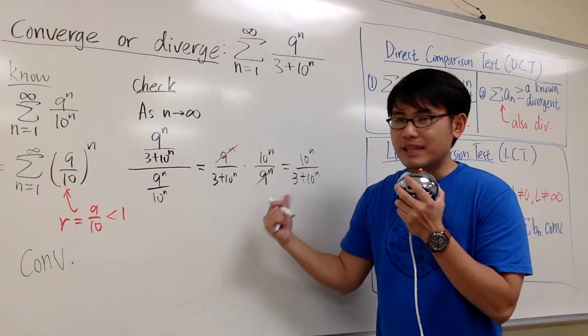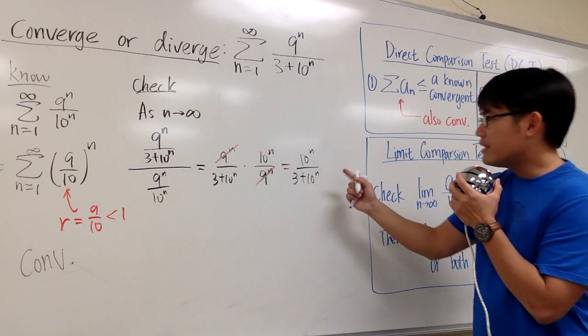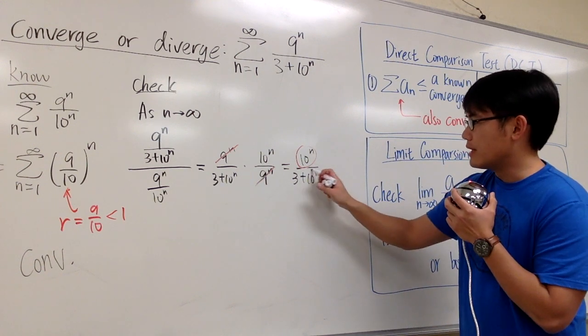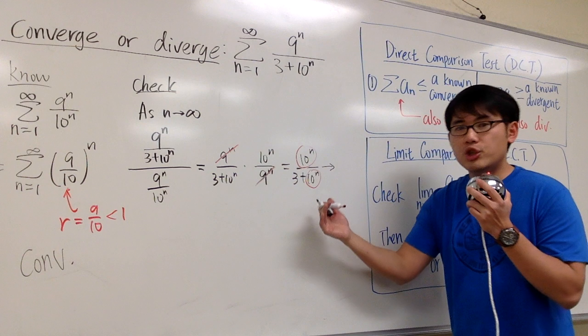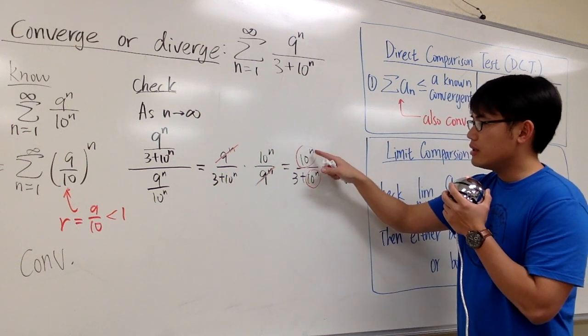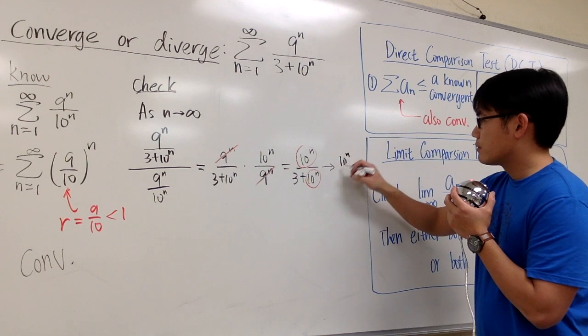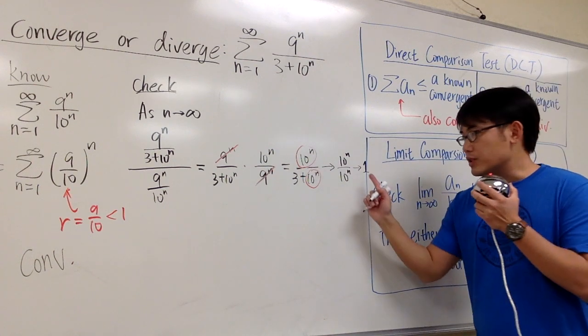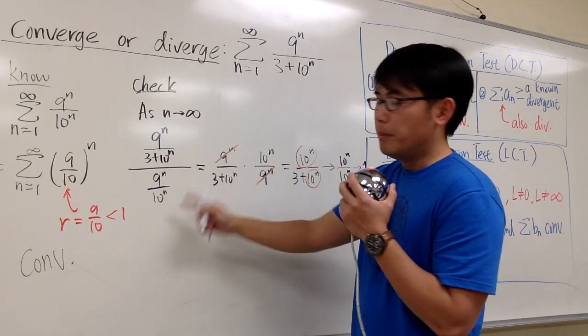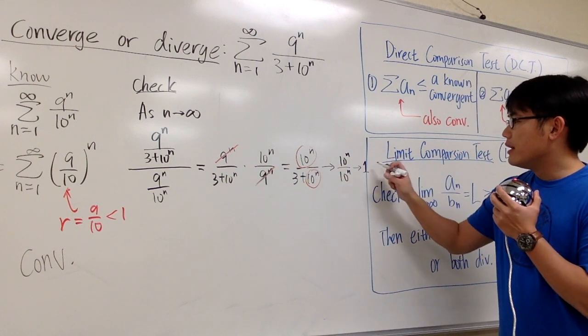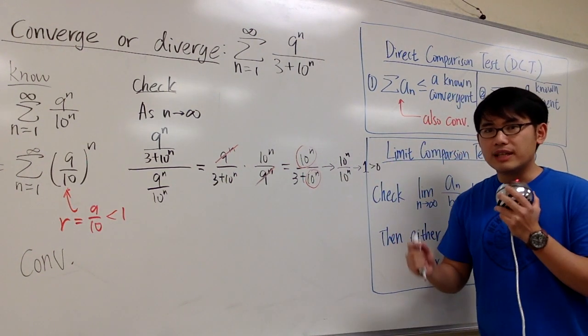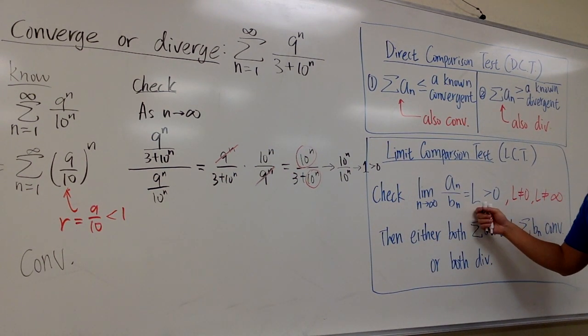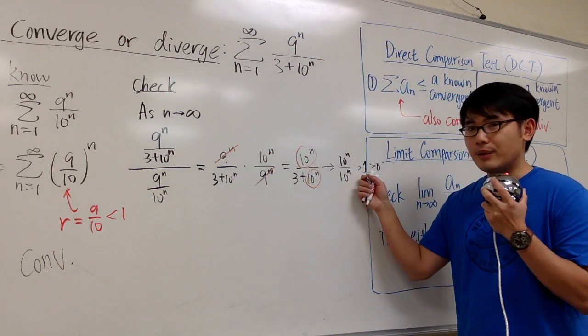And finally, we're going to take the limit as n goes to infinity, and all that matters is on the top, the 10 to the n, and on the bottom is also the 10 to the n. The 3 doesn't matter. And I'm going to draw an arrow, because I'm showing this is approaching 10 to the n over 10 to the n, which we know is approaching 1. So as we can see, this is the limit of a_n over b_n, and we get the answer is equal to 1, which is greater than 0. That's good, because we get to draw a conclusion. Make sure that we have a limit that's greater than 0 and it's not infinity. Then we get to draw a conclusion.